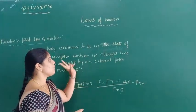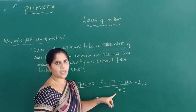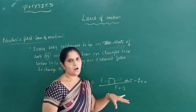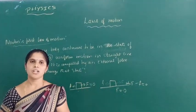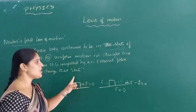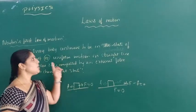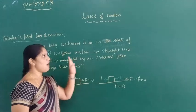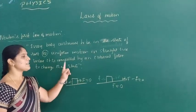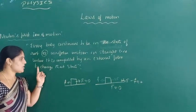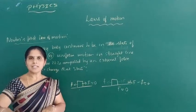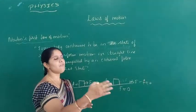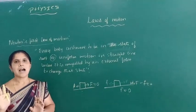Therefore, in both cases, the external force is equal to zero. If the external force is equal to zero, the body does not change its state of rest or its state of uniform motion by itself — it is only changed if an external force is applied. This is Newton's first law of motion: every body continues in its state of rest or uniform motion in a straight line unless it is compelled by an external force to change that state. That means the body at rest continues to be at rest, and a body in motion continues to be in the state of motion unless an external force is applied.